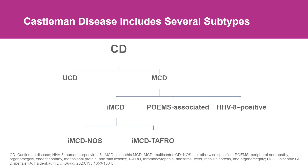Castleman disease describes a group of disorders that share the same appearance under the microscope but behave quite differently. It's really important to subtype Castleman disease based on these clinically relevant features.